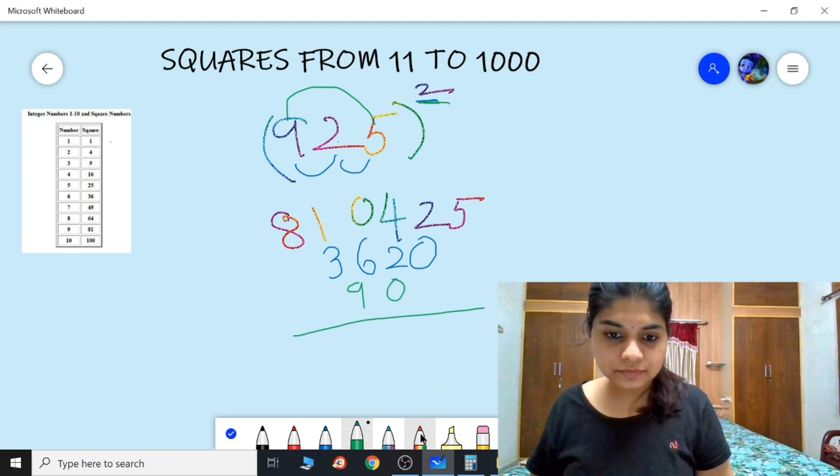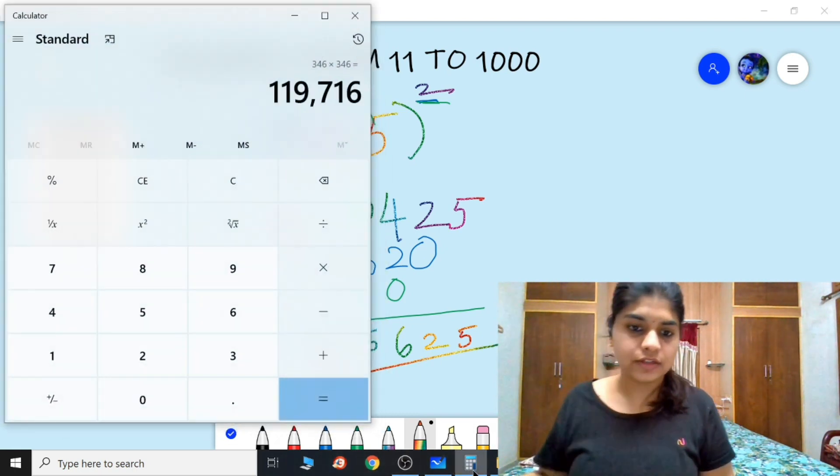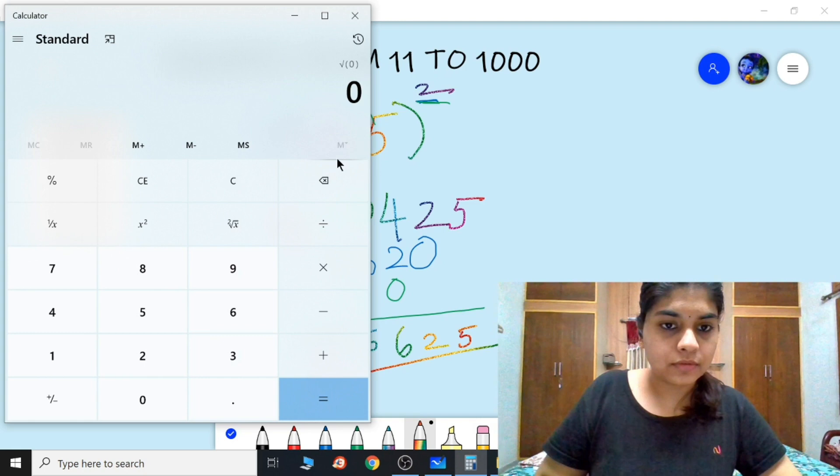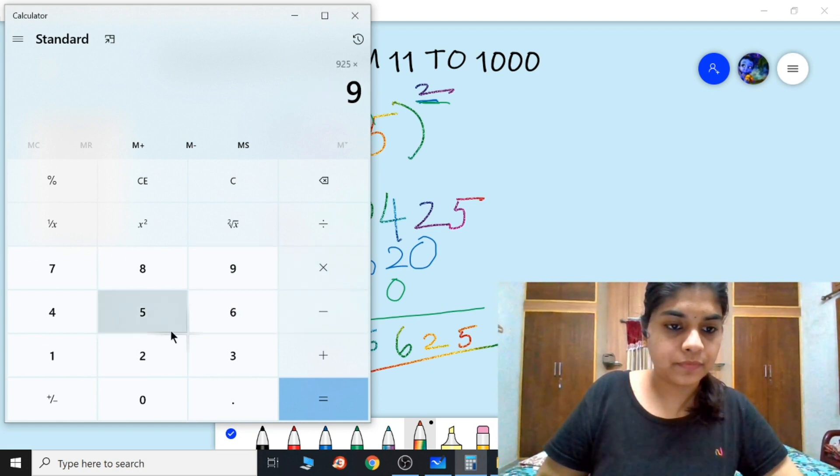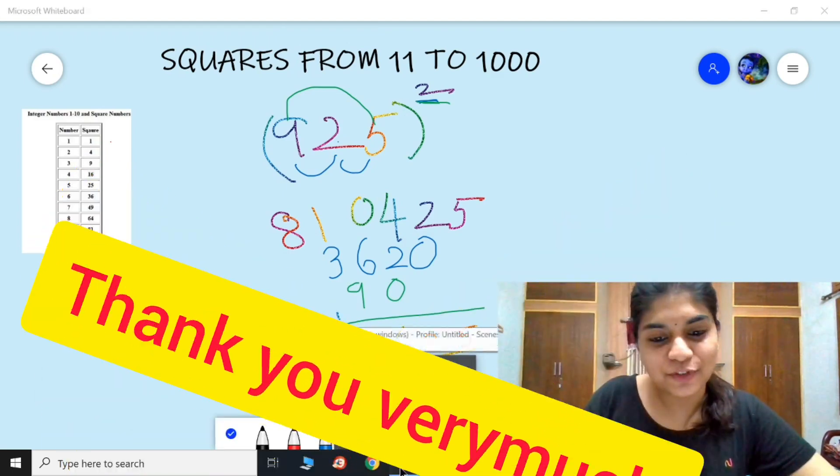We're going to add this. The final answer we get is 5, 2, 6, 15, so 5 and 8. So 855625 is the answer. Let's check the calculator. 925 into 925 is 855625. That's the answer. So hope this video is helpful, thank you.